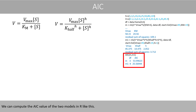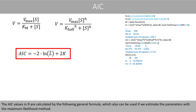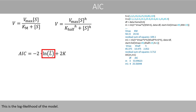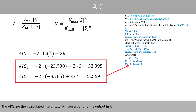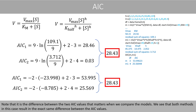We can compute the AIC value of the two models in R like this. The AIC values in R are calculated by the following general formula, which also can be used if we estimate the parameters with the maximum likelihood method. This is the log likelihood of the model. The AICs are then calculated like this, which corresponds to the output in R. Note that it is the difference between the two AIC values that matters when we compare the models. We see that both methods in this case result in the exact same difference between the AIC values.